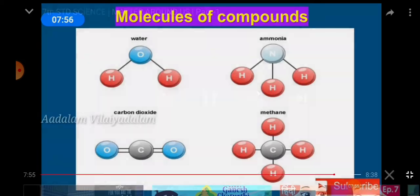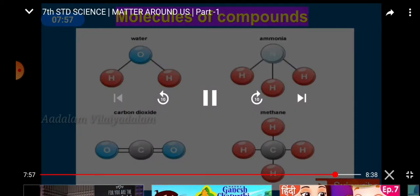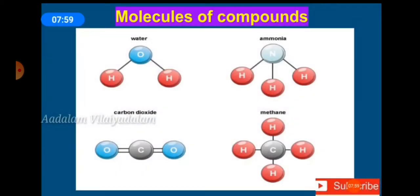Molecules of compounds consist of a fixed number of different types of atoms chemically combined. Examples: water, ammonia, carbon dioxide, and methane are molecules of compounds, each consisting of a fixed number of different types of atoms chemically combined.